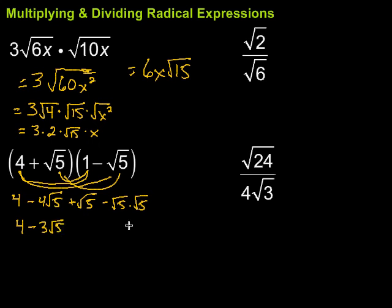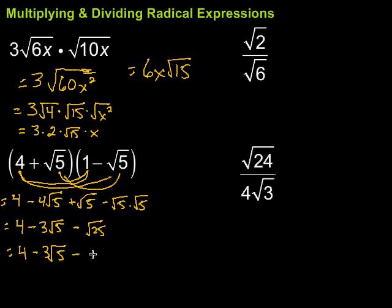For the last term, square root of 5 times square root of 5 — we can multiply the radicands, so 5 times 5 is 25, giving minus the square root of 25. The square root of 25 is just 5. So now I have 4 minus 3 square root of 5 minus 5. I can combine 4 and minus 5, which gives minus 1 minus 3 square root of 5.